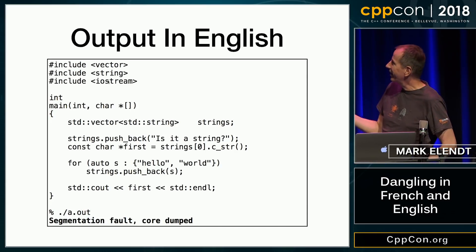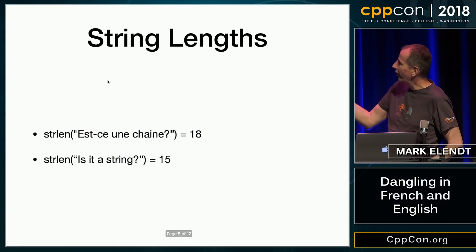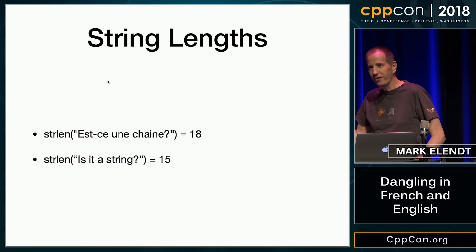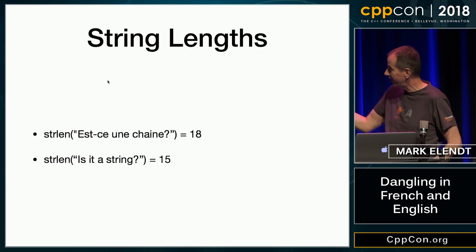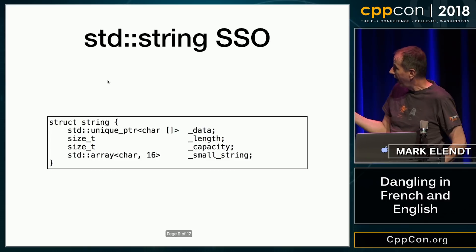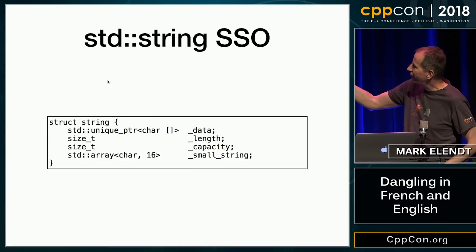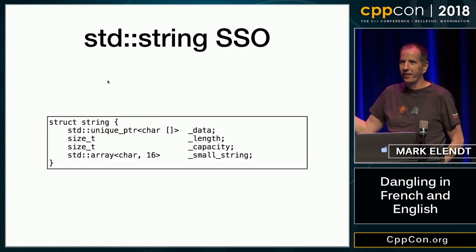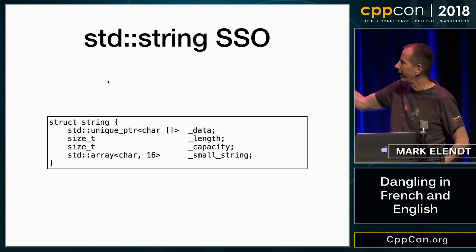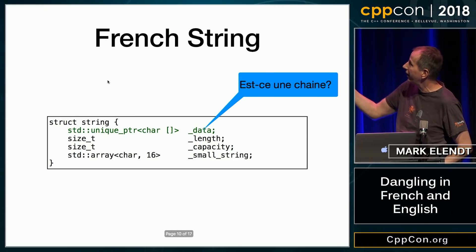So, what's exactly going on here? Well, if we take a look at the length of the strings: the length of the French string is 18, because French is much more complicated than English. The length of the English is only 15 characters. And so if we look at std::string, there's a small string optimization. If the length is less than 16, the data gets stored in the small string buffer. This is just an approximation of std::string — otherwise, it's stored in the heap data pointer.